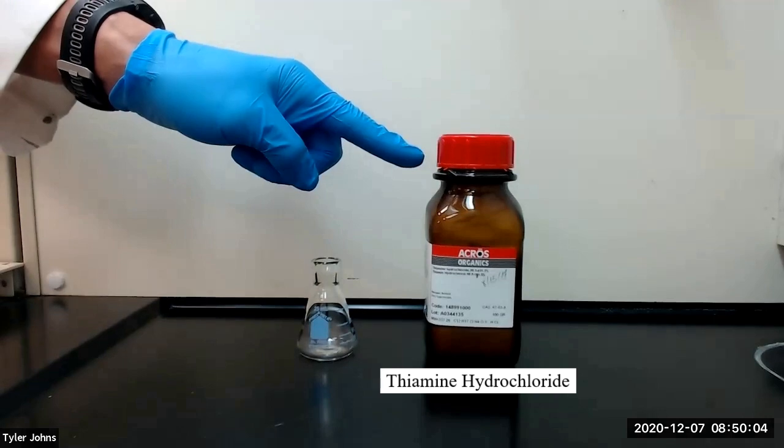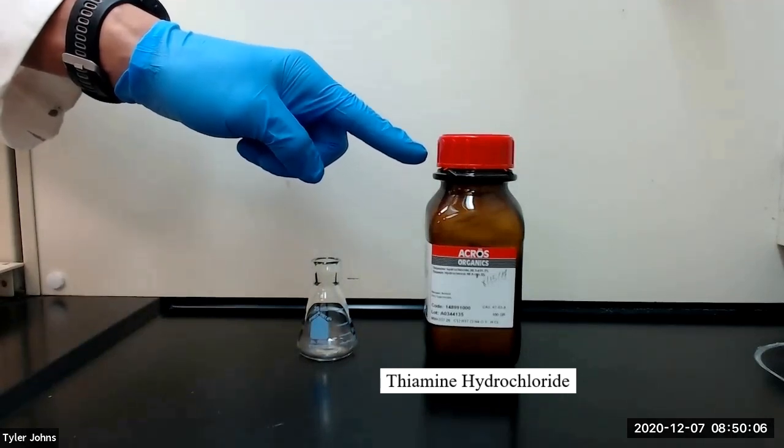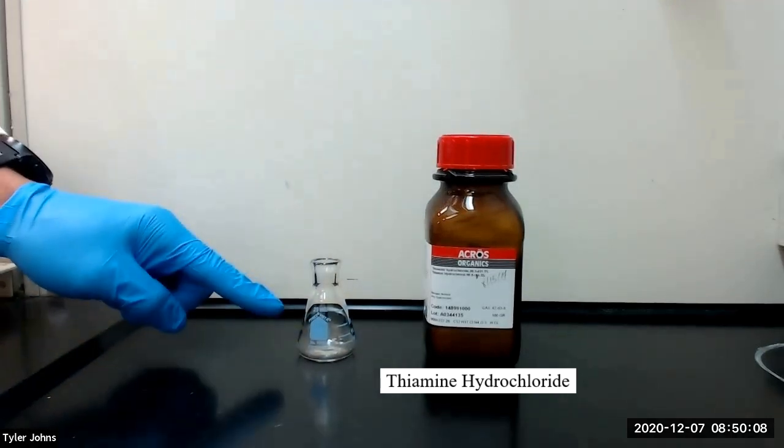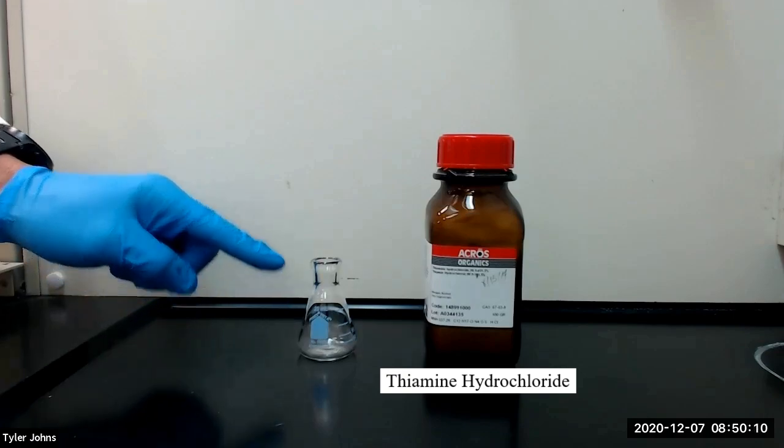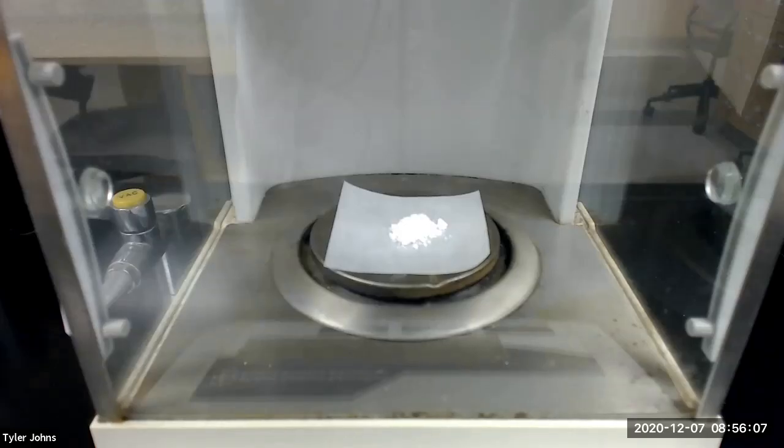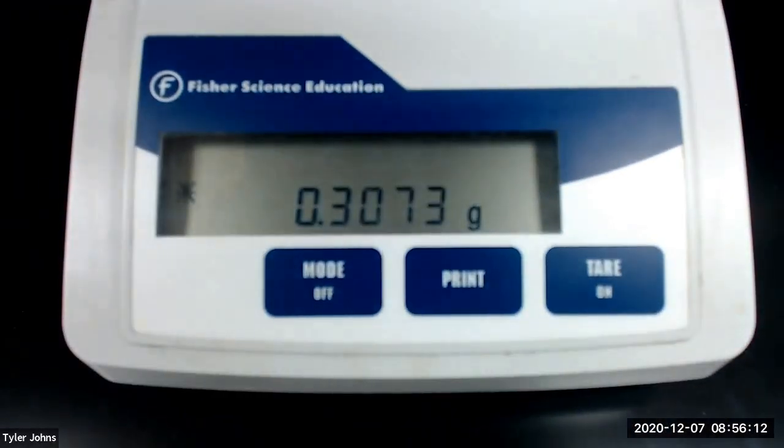To begin, we will add approximately 0.3 grams of thiamine hydrochloride to a 25 milliliter Erlenmeyer flask. The mass of thiamine hydrochloride that we will be using is 0.3073 grams.